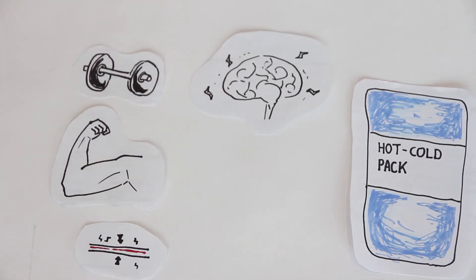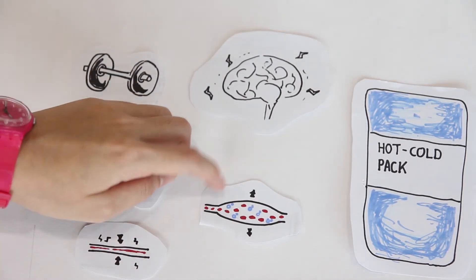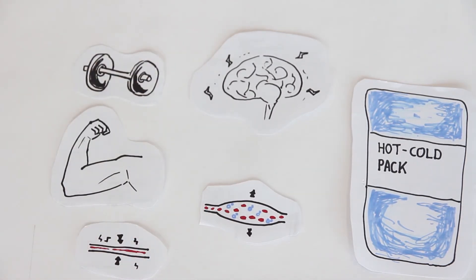Heat can be used to dilate blood vessels, increasing blood flow and providing additional oxygen and nutrients to help heal the damaged muscles.